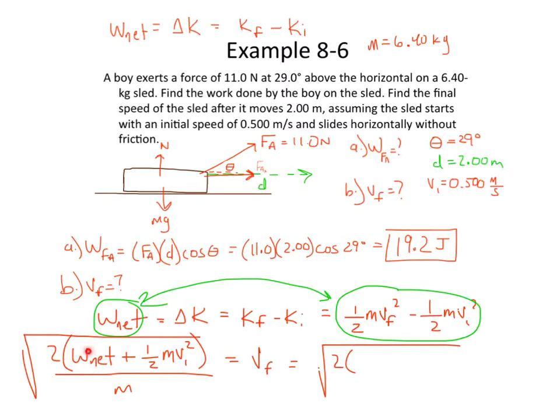By the way, this should be net work, which means the sum of all the work's done. But since there isn't only one work being done, there's no friction, we don't have to subtract anything. So the network is the work done by that applied force. So that's our 19.2 joules. 19.2 plus, and this is still in parentheses right here, one-half. I'm going to put 0.5 times the mass, which is the mass of our sled. Here's where the mass comes in. 6.40 times initial velocity squared, 0.500. We're going to square that, and then close parentheses. All that's going to be underneath the square root, as is the mass of the sled, 6.40 kilograms.